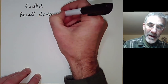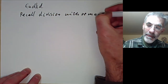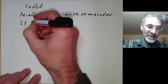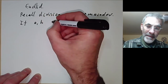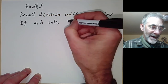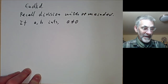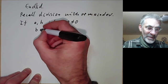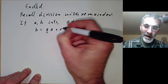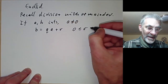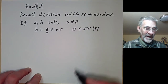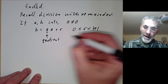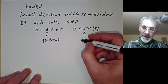First, let's recall division with remainder. If we have two integers a and b with a ≠ 0 (dividing by zero causes problems), then we can write b = qa + r with 0 ≤ r < |a|. Here q is the quotient and r is the remainder.